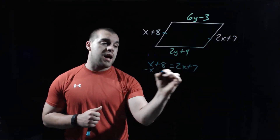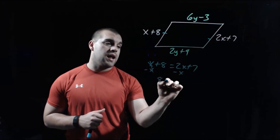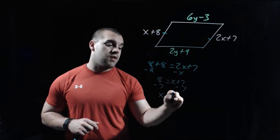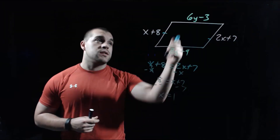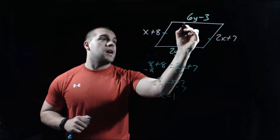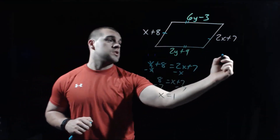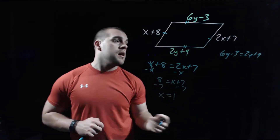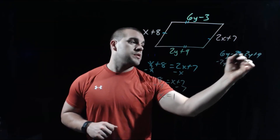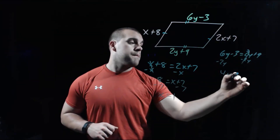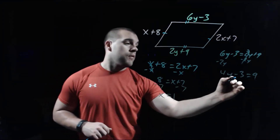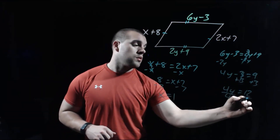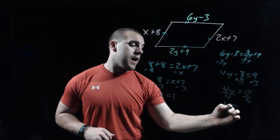I'm going to subtract x from the left side over to the right, giving us 8 equals x plus 7. Subtracting 7 from both sides, we end up with x equals 1. We can do something very similar to find y. The top side has to be congruent to the bottom side, so we set them equal: 6y minus 3 equals 2y plus 9. Subtracting 2y gives 4y minus 3 equals 9; adding 3 gives 4y equals 12; dividing by 4 gives y equals 3.